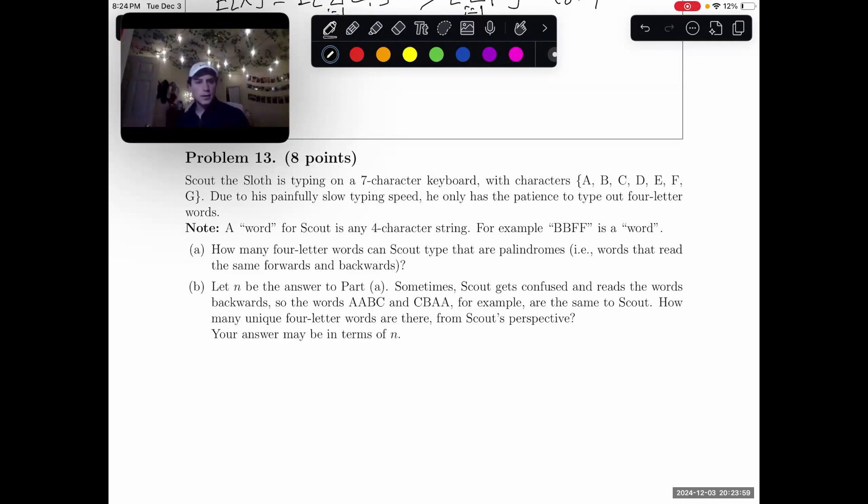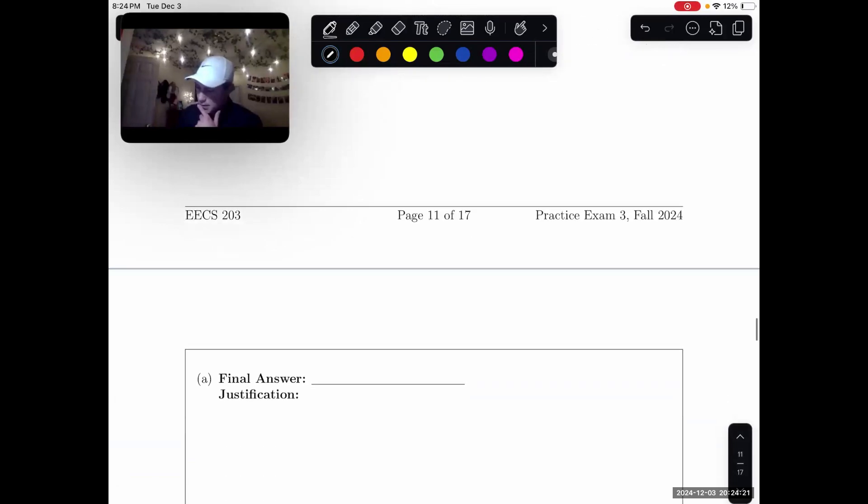And then for B, let N be your answer to part A. Sometimes Scout gets confused and reads the words backwards. So the words AABC and CBAA, for example, are the same to Scout. How many unique four-letter words are there from Scout's perspective? First things first, let's look at A.